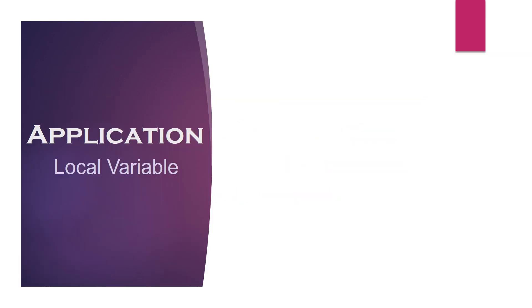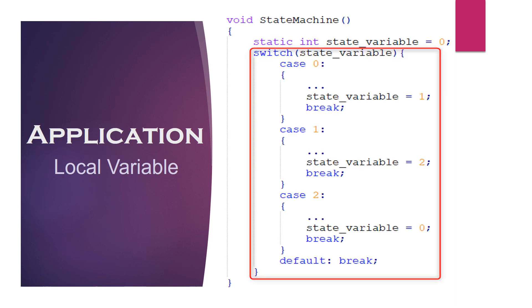State machine implementation is one of the most common applications of a local static variable. As shown in this example, the state variable is a static local variable which will be defined at the time of the first call to the function state_machine and will be initialized to zero. The value of the static variable will be retained across multiple function calls, so by changing the value it can execute different code units.